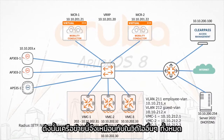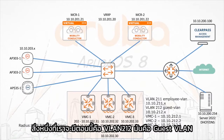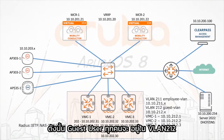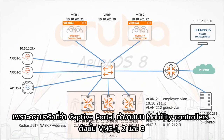The network is the same as in all the other videos. One extra thing that we will have now is VLAN 2.1.2, that's the guest VLAN. So every guest user will be in VLAN 2.1.2. Because the captive portal runs on the mobility controller, so that's VMC 1, 2, and 3.